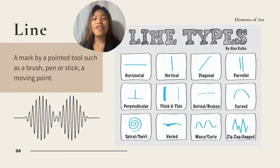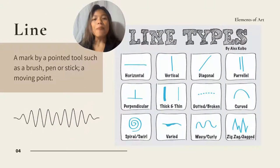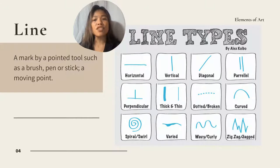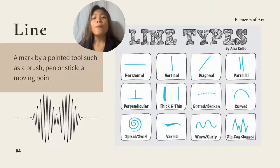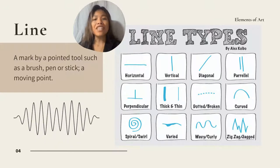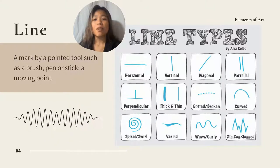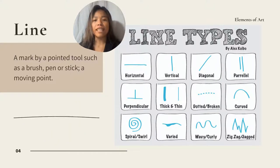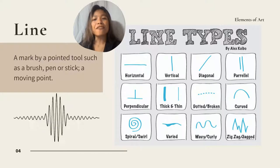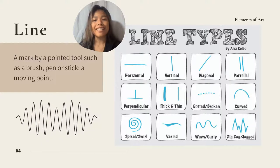First, Line. A mark made by a pointed tool such as a brush, pen, or stick, or a moving point. These are the different kinds.